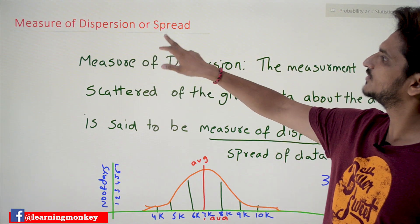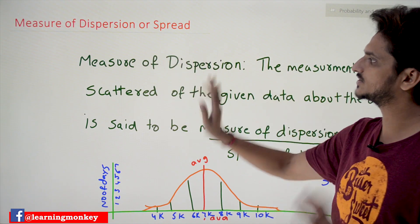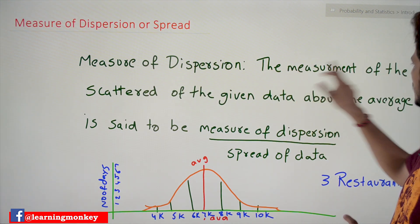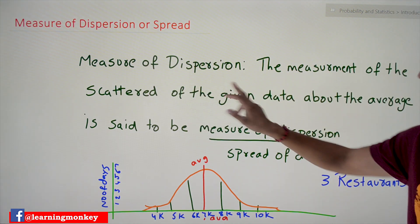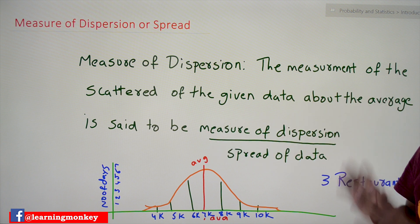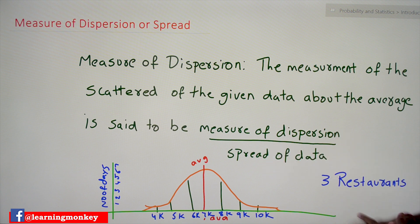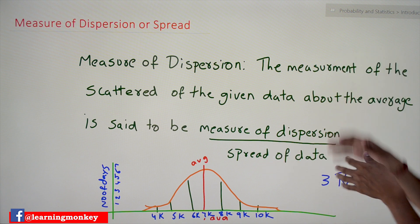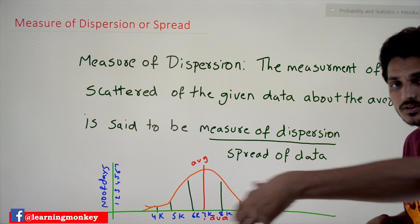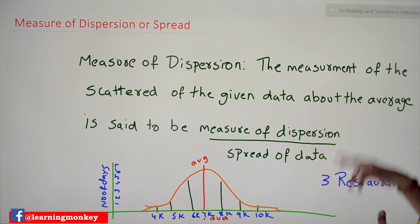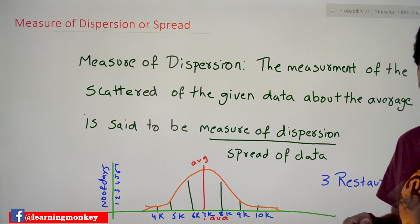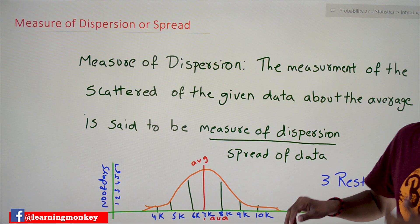Measure of dispersion or spread — let's understand with the definition. The measurement of the scatteredness of the given data about the average is said to be measure of dispersion, also called spread of data. It means how much the data is dispersed or scattered from the average — that is what measure of dispersion means.